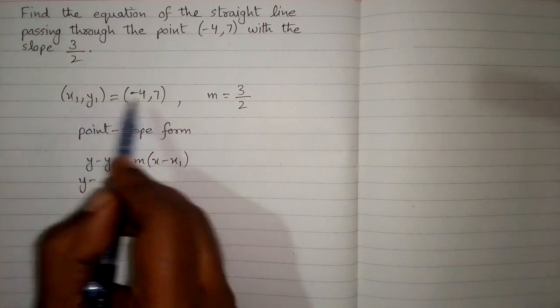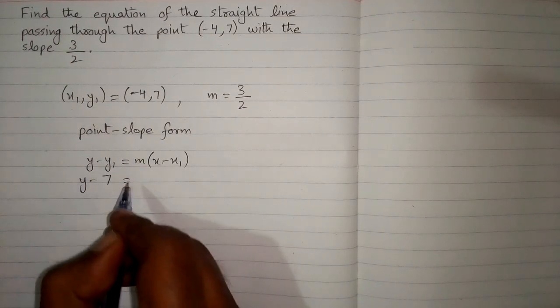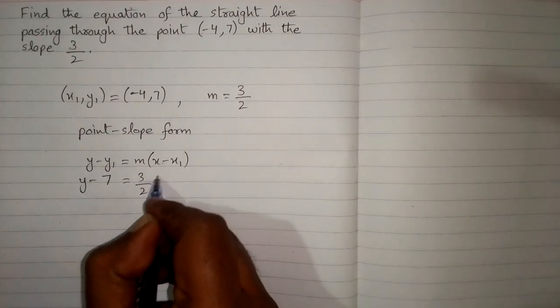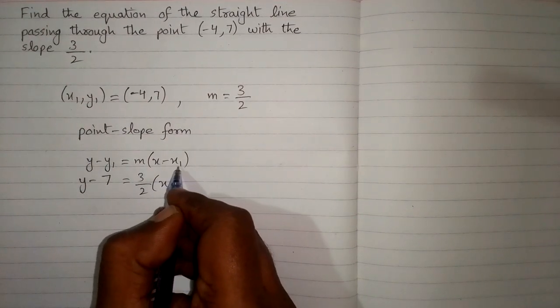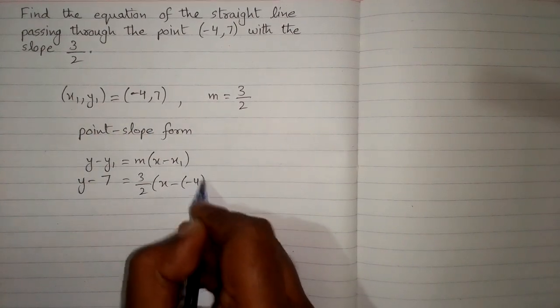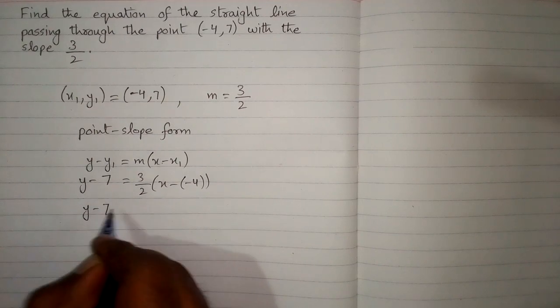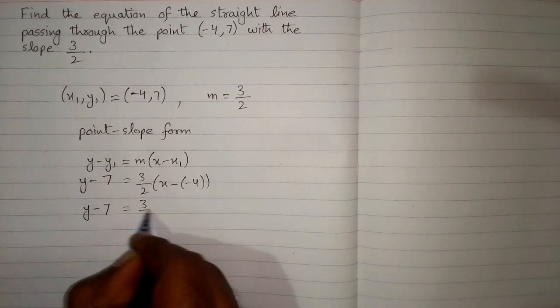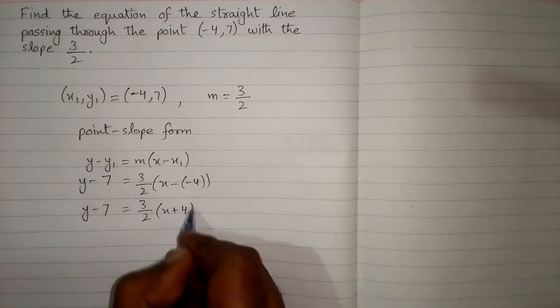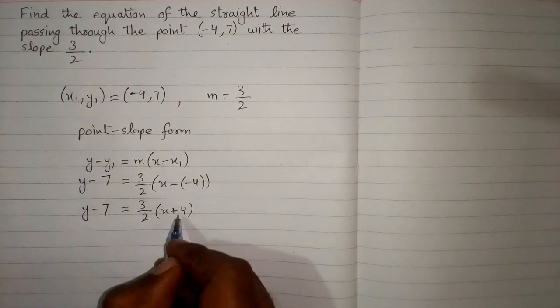So the value of y1 is 7, so we put 7 in place of y1, and then we put the value of m which is 3 upon 2. Then we put the value of x1 which is minus 4. So we have y minus 7 is equal to 3 upon 2 times x plus 4 because minus times minus 4 is plus 4.